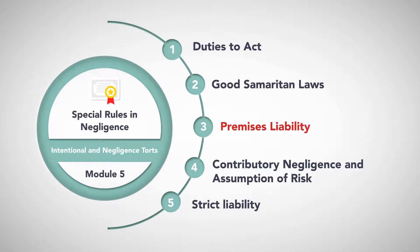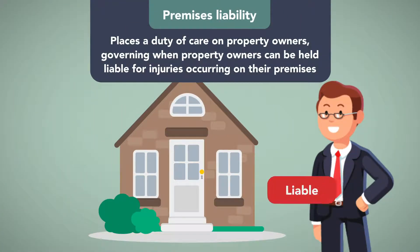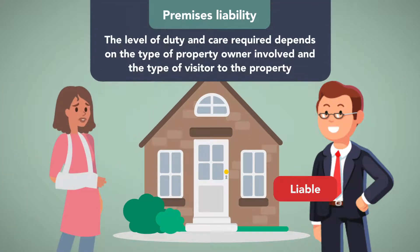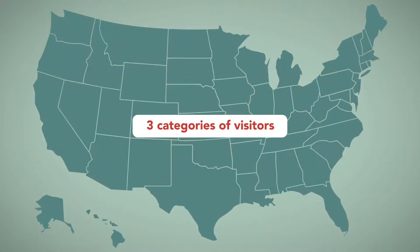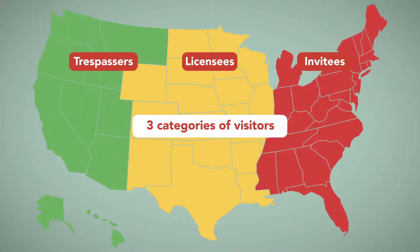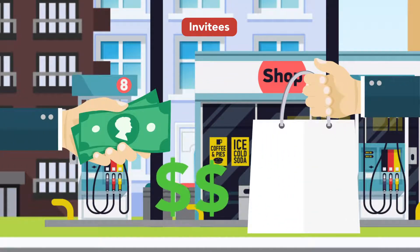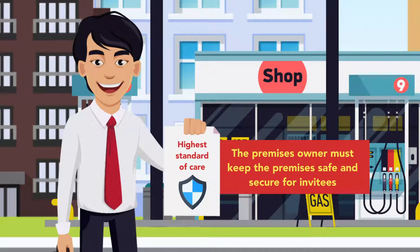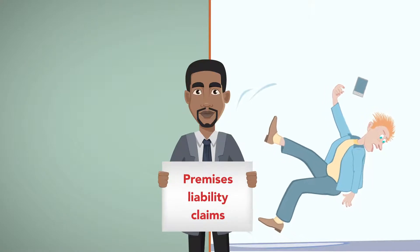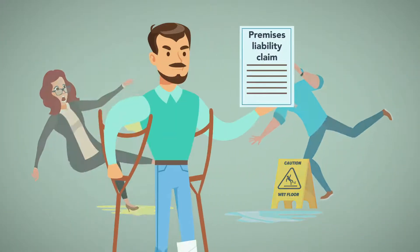Premises Liability places a duty of care on property owners, governing when property owners can be held liable for injuries occurring on their premises. The level of duty and care required depends on the type of property owner involved and the type of visitor to the property. States classify visitors into three categories: invitees, licensees, and trespassers. Invitees enter a property for purposes for which land is held open to the public or for business-related reasons. They may be customers in a store or people who enter an establishment for paid services. Owners typically owe these visitors the highest standard of care, meaning the premises owner must keep the premises safe and secure for invitees. These premises liability claims commonly involve slips and falls as well as falling objects.